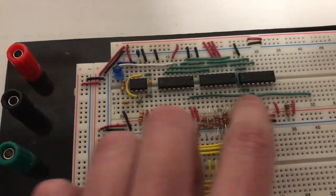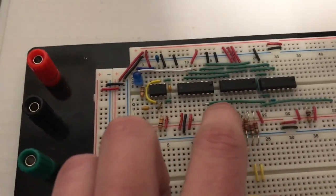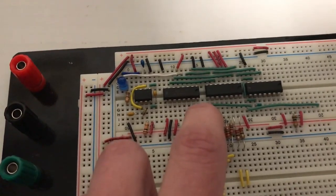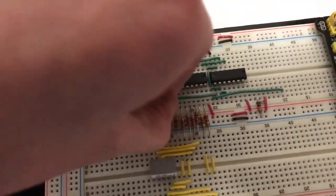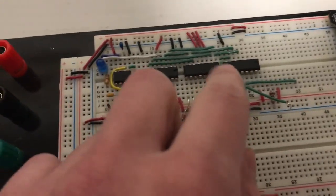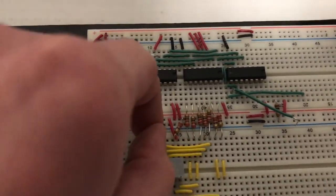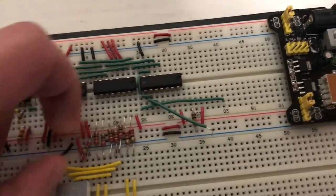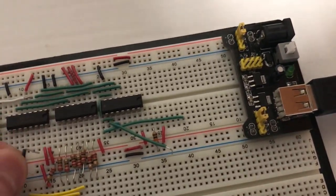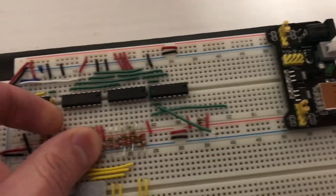And this was the reset signal, so this resets the counter when it reaches 10. I'm going to take this out, and this is the clear input of the counter. Now I'm going to tie this low so that it doesn't clear, because I don't want the counter to clear.